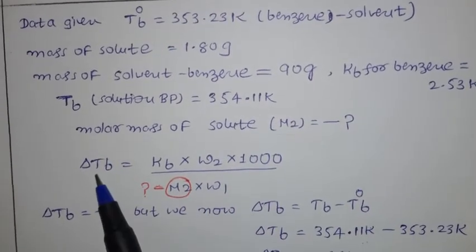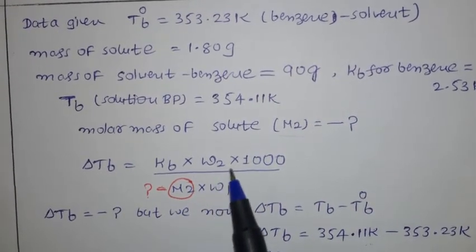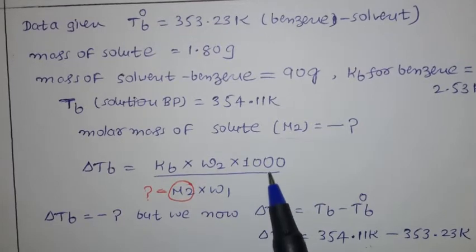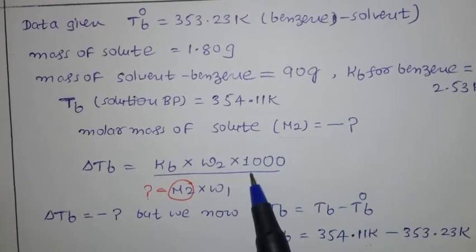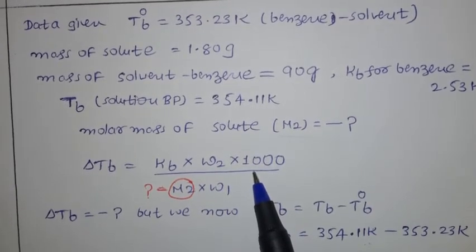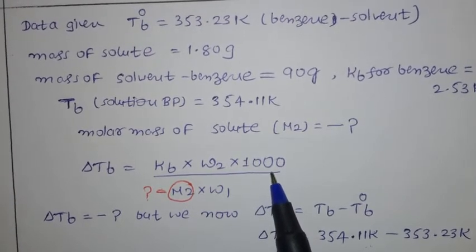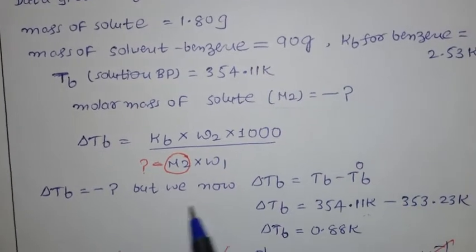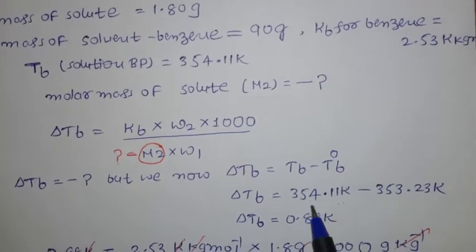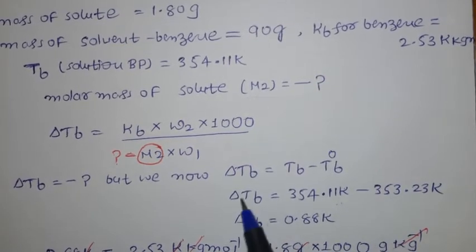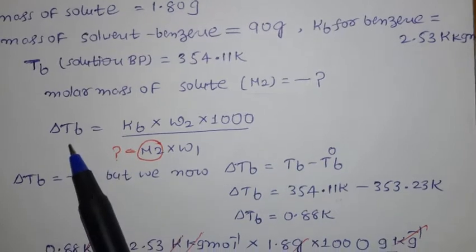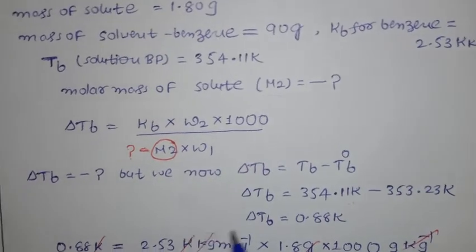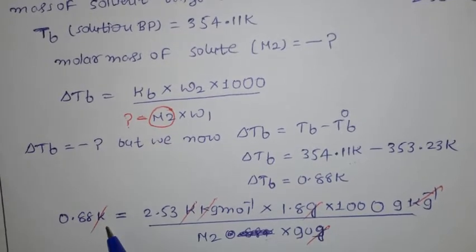We need to find M2, the molar mass of solute. The relation is: ΔTb = Kb × (w2 × 1000) / (M2 × w1), where w2 is mass of solute in grams, w1 is mass of solvent in grams, and we multiply by 1000 to convert grams to kg. First, ΔTb = Tb − Tb° = 354.11 − 353.23 = 0.88 kelvin.